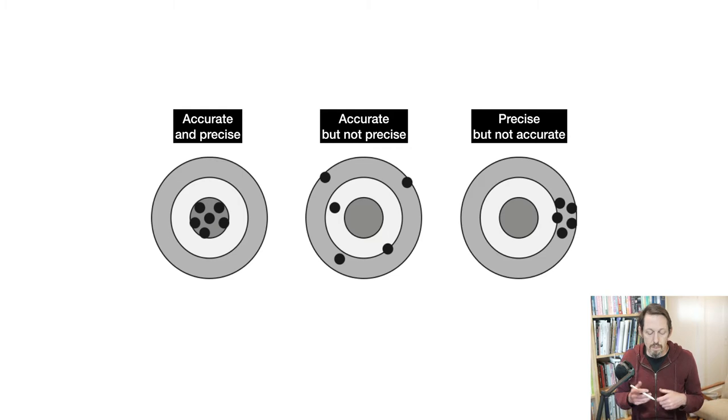You might have measurements that are accurate and precise—those are clearly what you'd like. But the measurements might also have different sources of noise. Those noises might be random, like in the middle case of this target where the center of the distribution is good but the spread is bad. It's accurate but not precise.